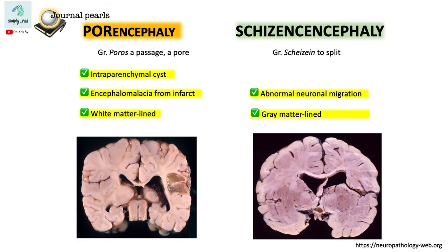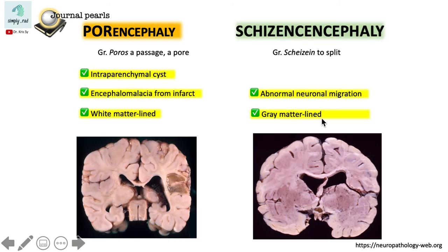So, compared to porencephaly, the pathology is different. In schizencephaly, we have abnormal neuronal migration. Therefore, the cleft is lined by dysplastic gray matter.